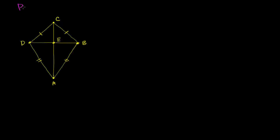What I want to do in this video is prove that segment AC is perpendicular to segment DB based on the information in this diagram over here — that this side has the same length as that side, and this side has the same length as that side. We're going to use one or more of our congruence postulates.